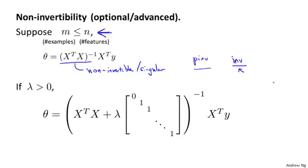Fortunately, regularization also takes care of this for us. Concretely, so long as the regularization parameter lambda is strictly greater than zero, it is actually possible to prove that this matrix, x transpose x plus lambda times this funny matrix here, is possible to prove that this matrix will not be singular and that this matrix will be invertible. So using regularization also takes care of any non-invertibility issues of the x transpose x matrix as well.